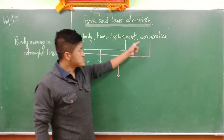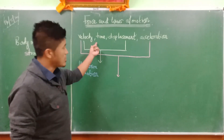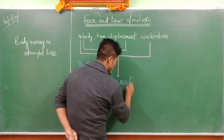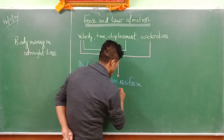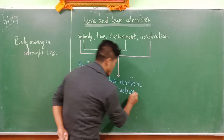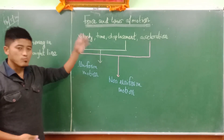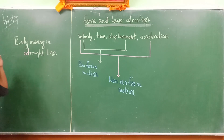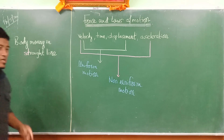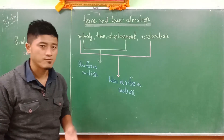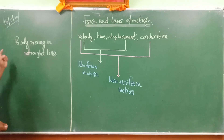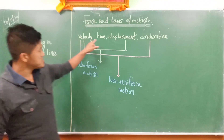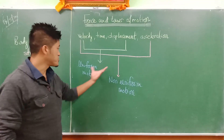The moment we insert acceleration along with velocity, time, and displacement, there is another kind of motion - that is non-uniform motion. Throughout the chapter on Motion, we were discussing a body or object moving in a straight line, not falling from a height or anything like that.